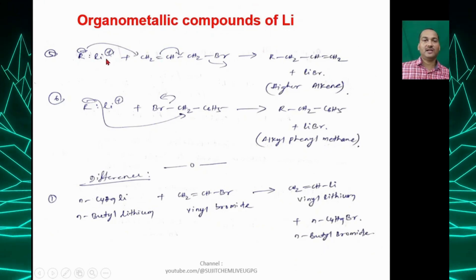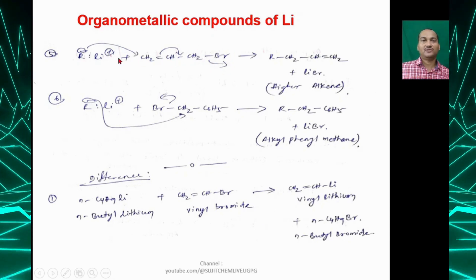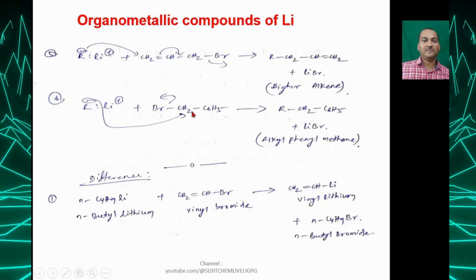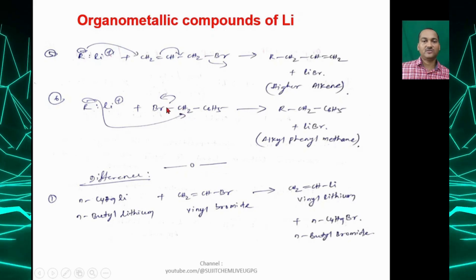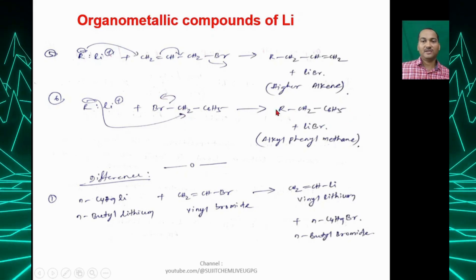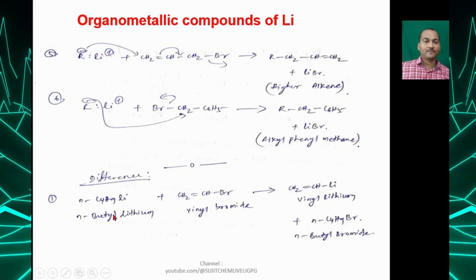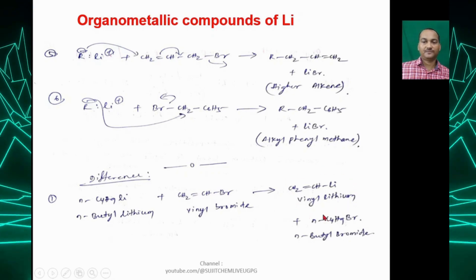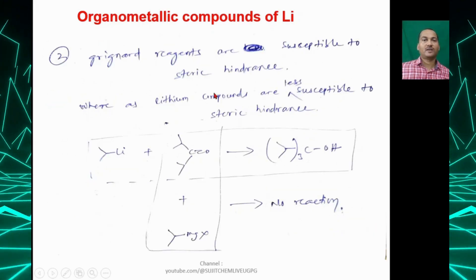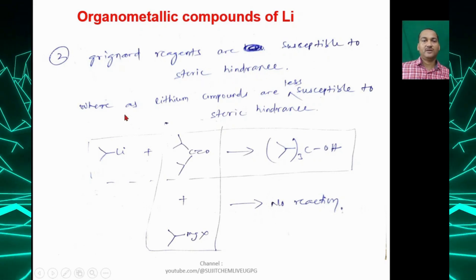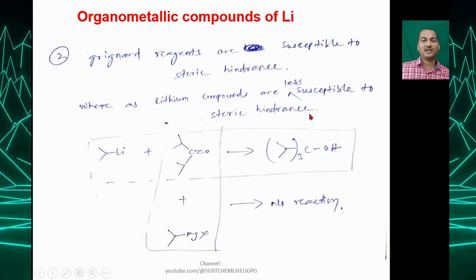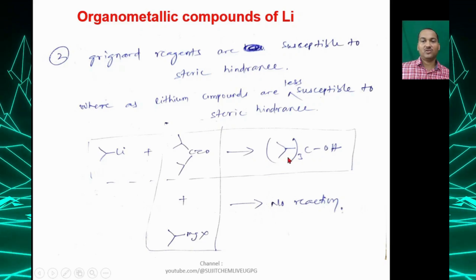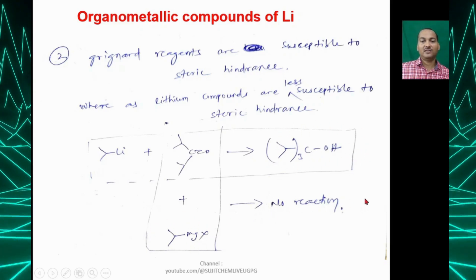Alkyl lithium can react with benzyl/allyl bromide: R⁻ attacks the CH₂ and the C-Br bond breaks, giving an alkylphenylmethane (higher alkene). n-Butyl lithium reacts with benzyl bromide to give benzyl lithium plus n-butyl bromide. Grignard reagents are susceptible to steric hindrance whereas organolithium compounds are less susceptible — with a sterically hindered ketone, the lithium reagent still gives an alcohol product, whereas the Grignard gives no reaction.